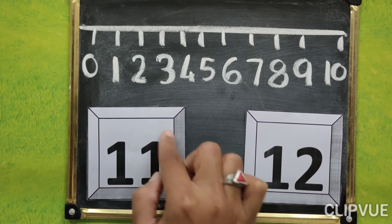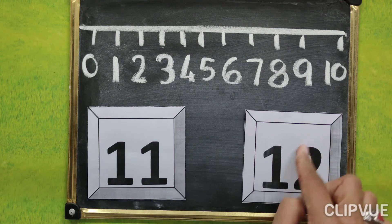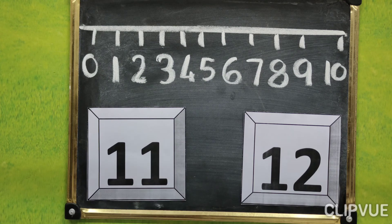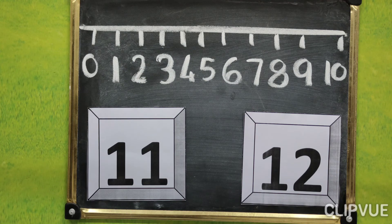Here which digit is 1. And here which digit is 2. So 2 is bigger than 1. So which number is big? 12.